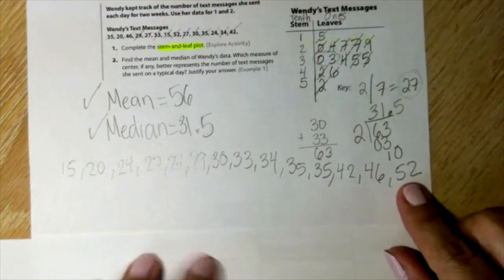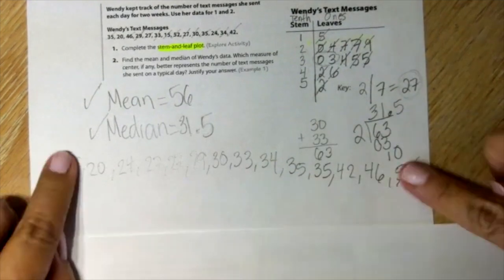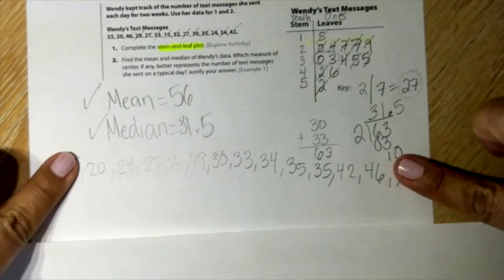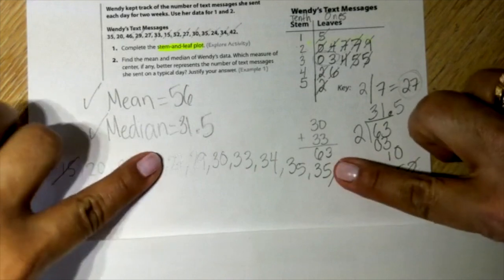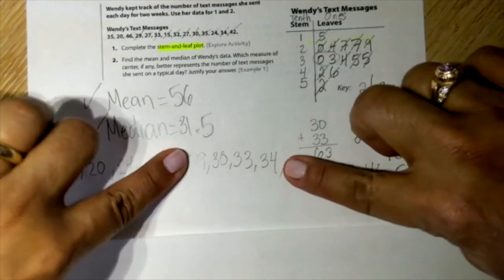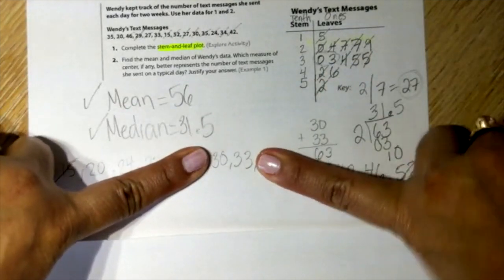And then we need to find the median, the number in the middle. You can cross them out like this, or do it with your finger. You see the same thing? 30 and 33, which we did it here.